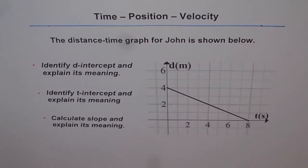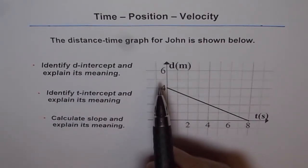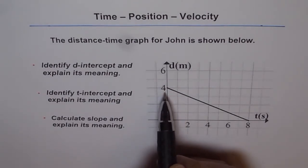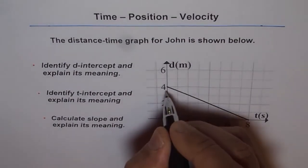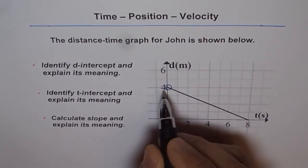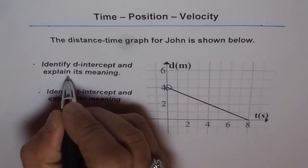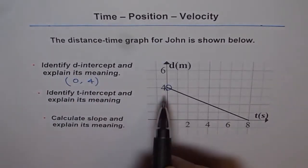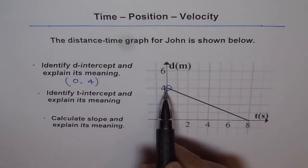We will now answer the question: identify d-intercept. The vertical axis is distance d in meters, so wherever the graph crosses the vertical axis — referred to as d — will be called the d-intercept. So the graph intercepting the d-axis is the d-intercept. Here, d-intercept is this point, and at this point you will note that time t is 0. So we can write the coordinate of d-intercept as (0, 4). That is the d-intercept.